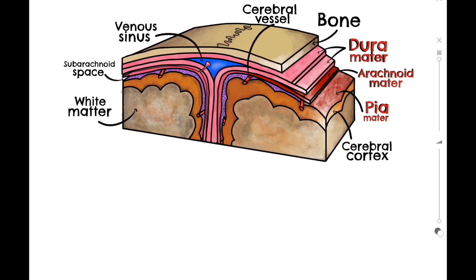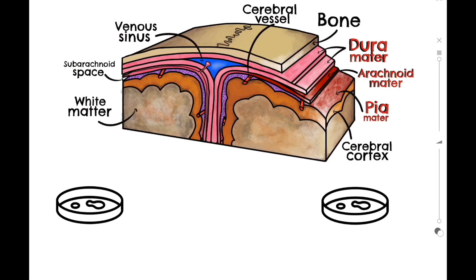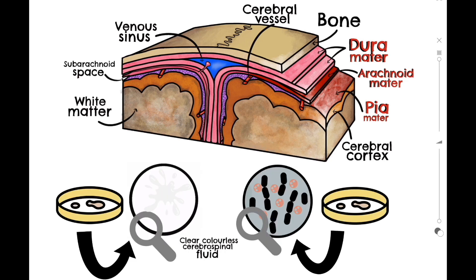When meningitis is suspected, it's important to perform a lumbar puncture to take a sample of the cerebrospinal fluid from the subarachnoid space. Normal CSF is clear and colourless; however, in meningitis the CSF may be milky-looking due to elevated white blood cells, particularly neutrophils. It may also contain the causative organism, whether that be bacterial, viral, or other.